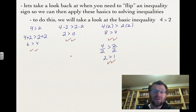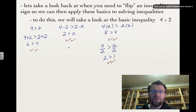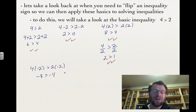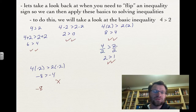But there are a few times that you do need to flip it. If we multiply both sides by negative 2, we now get negative 8 is greater than negative 4 — and that is not true. So in order to make this true, we need to turn that inequality sign around. That's the first case: if you multiply by a negative, you need to flip that sign.